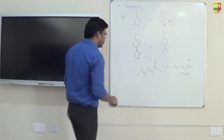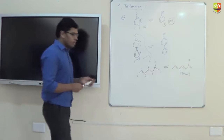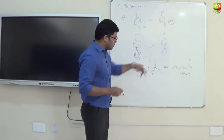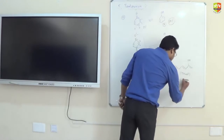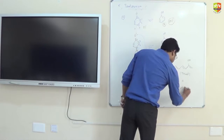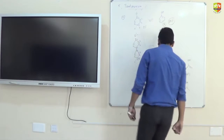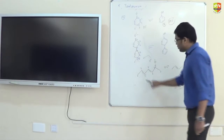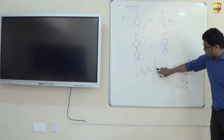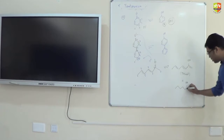Hydrogen always comes out from the odd number of carbon. From carbon 7, hydrogen comes to the oxygen. So this gives you OH here. This hydrogen comes over here, so this pi bond will distribute between 2 and 3. So here we have the pi bond.